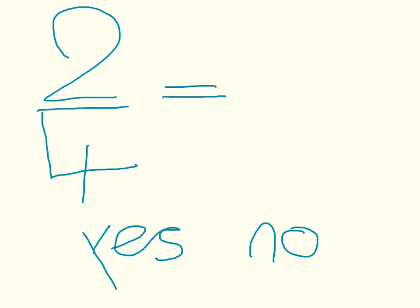2, 4. So they are in the same times table. Now, let's see how many 2's in 4. 2, 4. So the answer is 2.